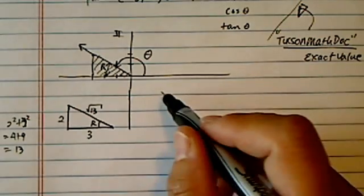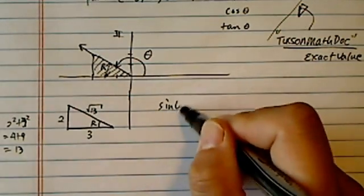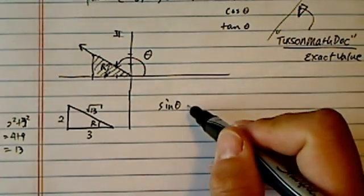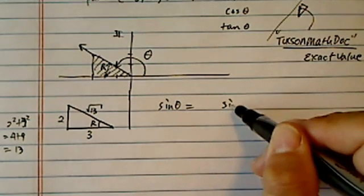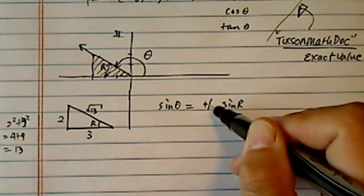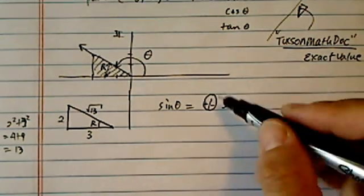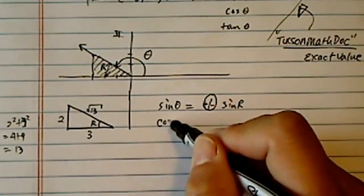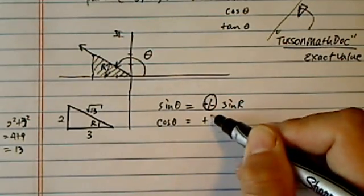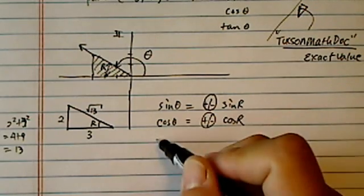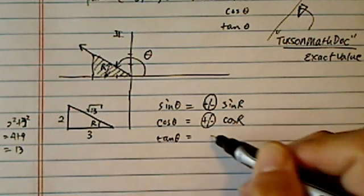what you need to realize is that sine theta is related to sine of r. It's either plus or minus. We don't know yet. We're going to have to decide. Cosine theta also related to the reference angle. So is tangent.